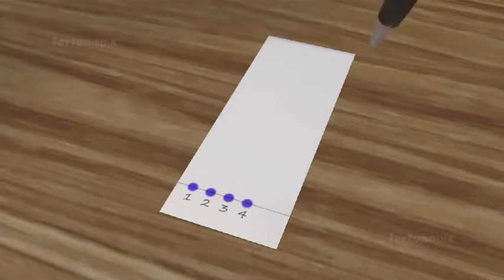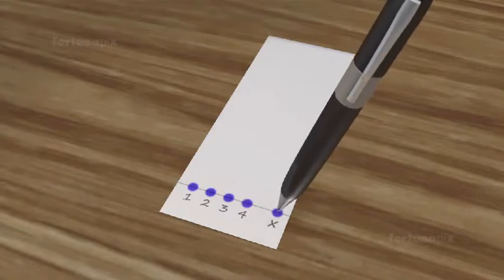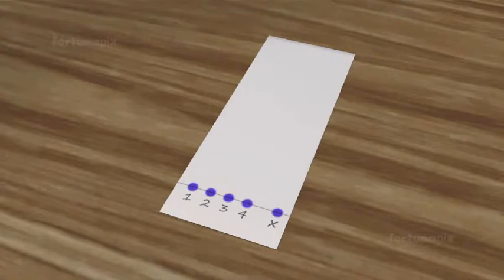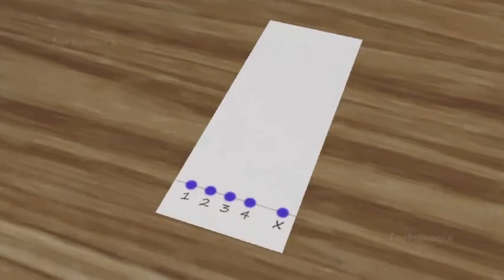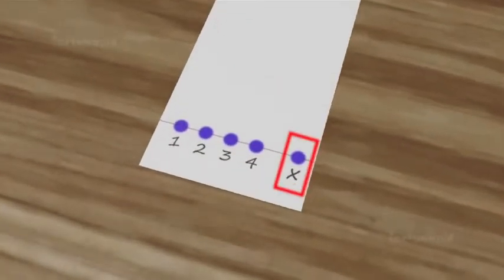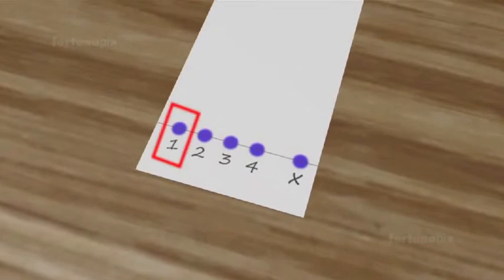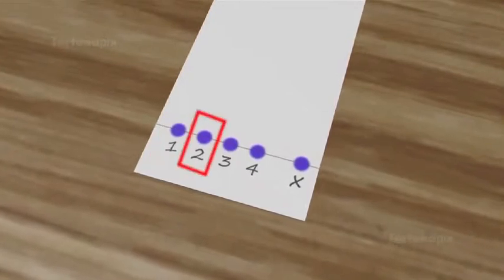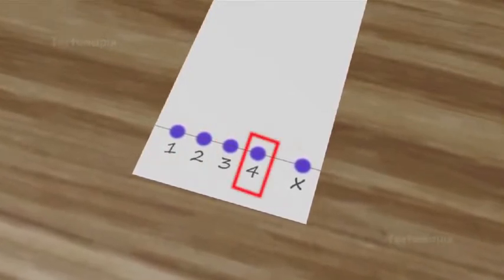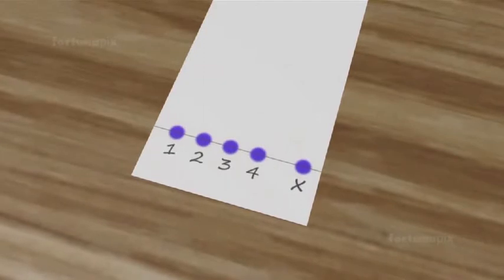Mark another dot with the pen which was used to create the writing sample. Note the dot as X for the pen used to write the sample, and number the additional dots as 1, 2, 3, and 4 to identify the other pens.